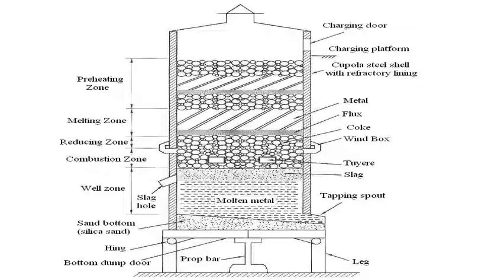After removing slag, there are two tuyeres — a wind box on the left and right side. The main function of the tuyeres and wind box is to supply high-pressure air into the furnace. The charge layers consist of coke, flux/plugs, and metal — cast iron — supplied to the furnace through the charging door, which is provided at the top right side of the vertical shell.